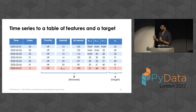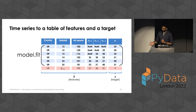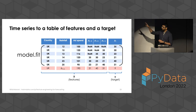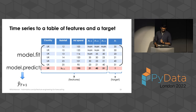With that, we have a table of data — features, a target — and then you can use everything in the training data. We'll show later how we encode the categorical features and missing data. So you can now fit your model, sklearn-style, use whatever you want, and you can predict one step into the future.